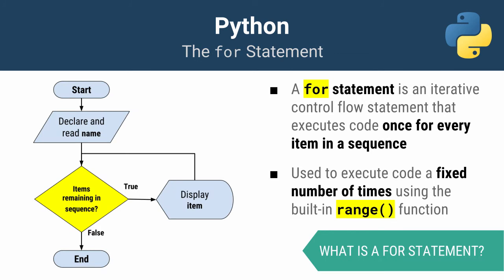Another iterative control flow statement you need to know is called the for statement. The for statement is another way of looping, but you execute code once for every item in a sequence. Remember, sequences are ordered lists of things. The most popular sequence in Python is the string, which is simply a sequence of characters. In my process flow, I declare a name variable, have the user enter their name, and use a for statement to loop through it printing each individual character.